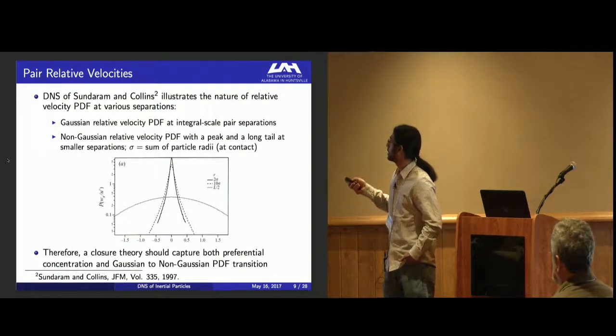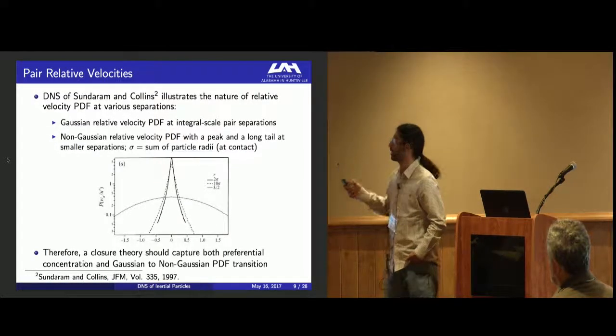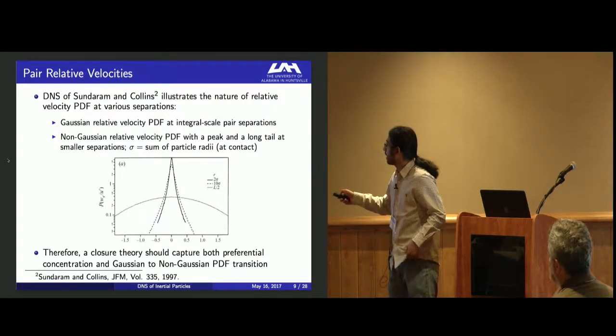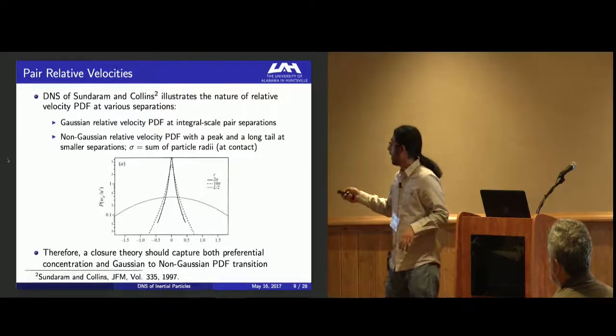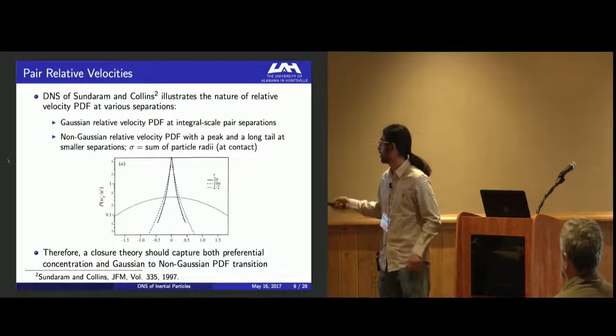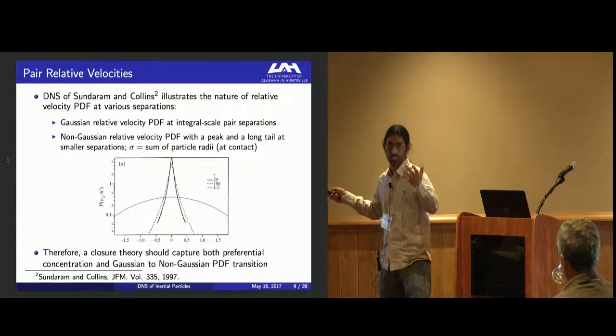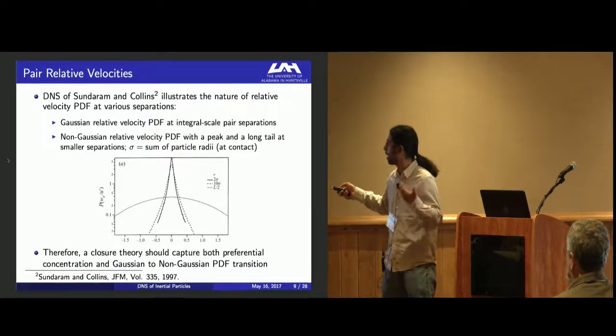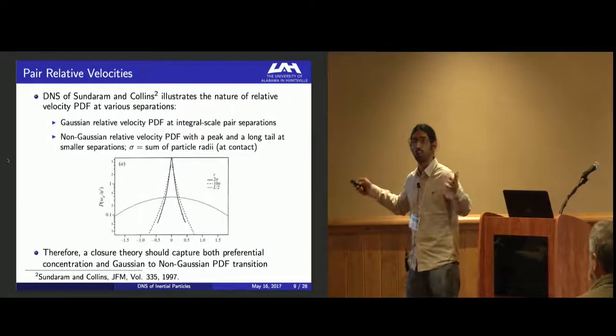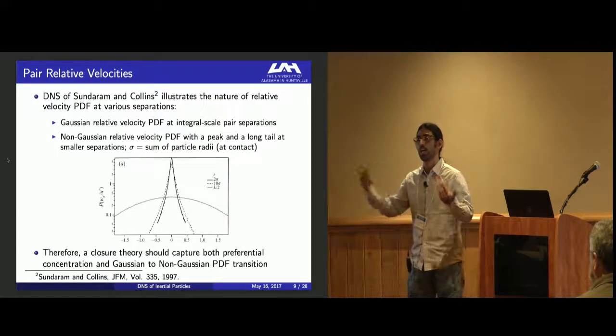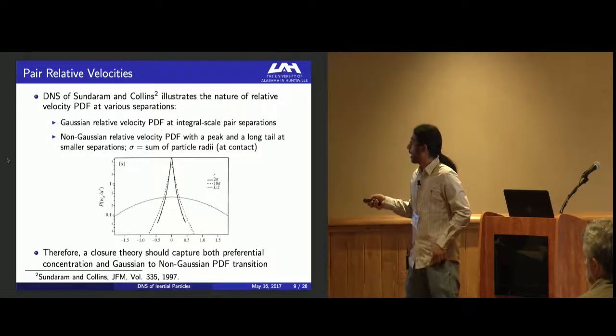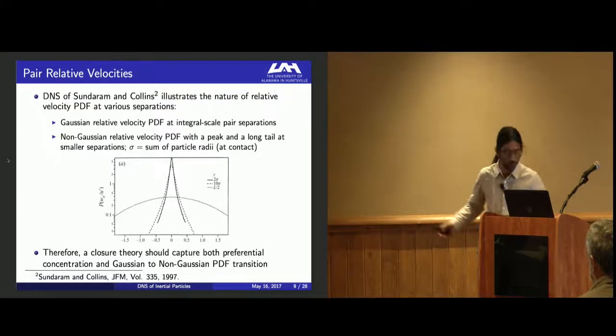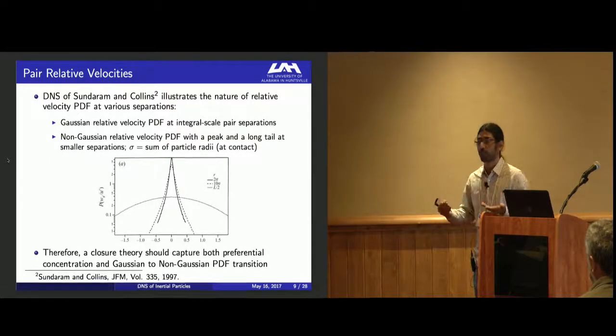DNS studies by Sundaram and Collins illustrate the nature of relative velocity PDF at various particle pair separations. At a pair separation of L/2, in the integral length scales, you see a nearly Gaussian PDF, whereas at smaller particle pair separations, you see this sharp peak with a long tail—the non-Gaussian nature of the PDF. We are moving away from the Gaussian regime. Therefore, a closure theory should capture both the preferential concentration and the Gaussian to non-Gaussian PDF transition.